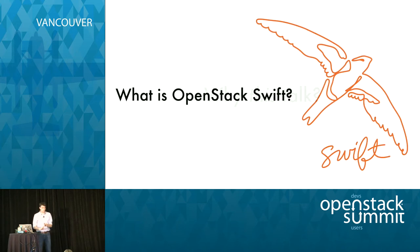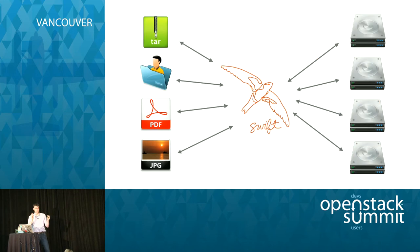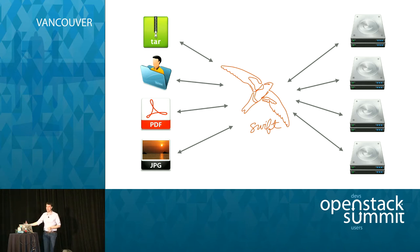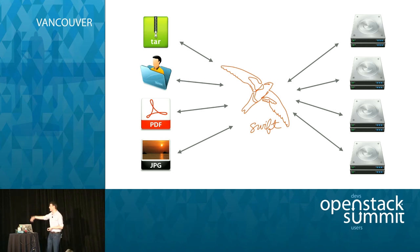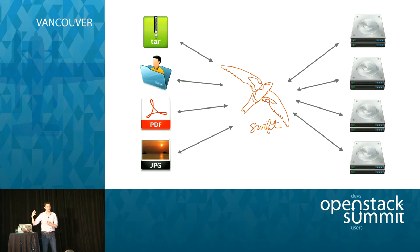Very briefly — what is OpenStack Swift? It's a large-scale distributed object storage system. The whole point is to separate the data from the actual media it's stored on. You can say: here's my data — my videos, my backups, my web content — any kind of static content that can grow without bounds. You just treat the storage system as a durable storage utility.